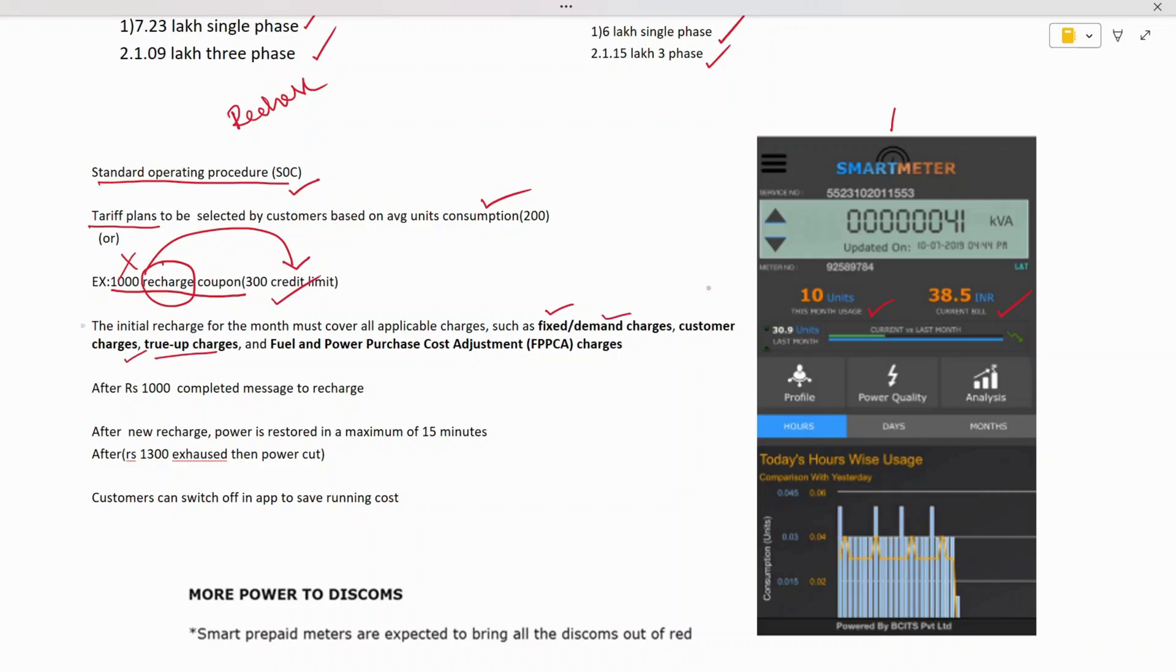This initial recharge covers all fixed charges, demand charges, customer duties, the true-up charge currently being paid, and Fuel and Power Purchase Cost Adjustment for 2018, 2019, and 2024. All this will be included in the basic recharge. The customer selects this basic recharge plan.